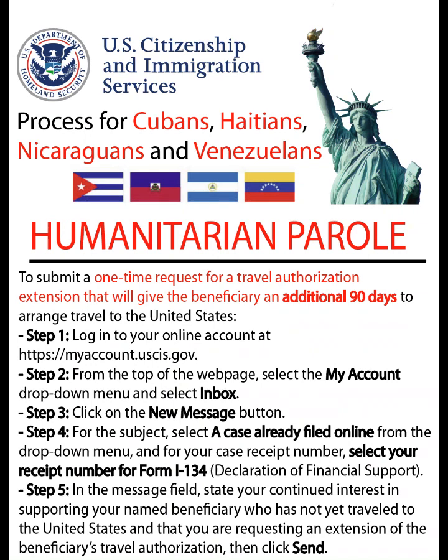Step 4 — For the subject, select a case already filed online from the drop-down menu, and for your case receipt number, select your receipt number for Form I-134, Declaration of Financial Support. Step 5 — In the Message field, state your continued interest in supporting your named beneficiary who has not yet traveled to the United States and that you are requesting an extension of the beneficiary's travel authorization, then click Send.